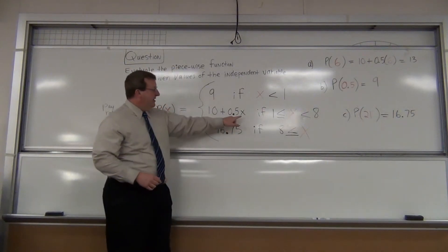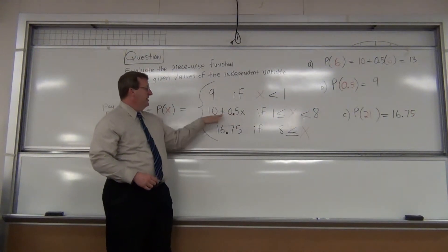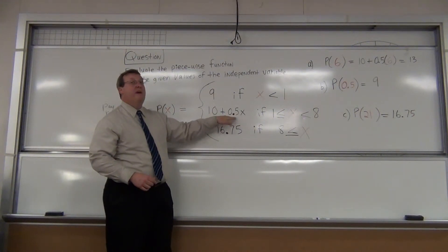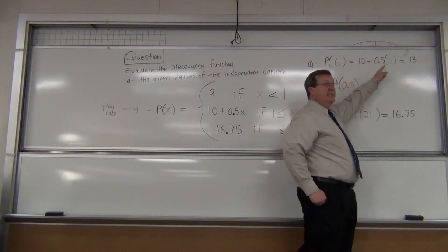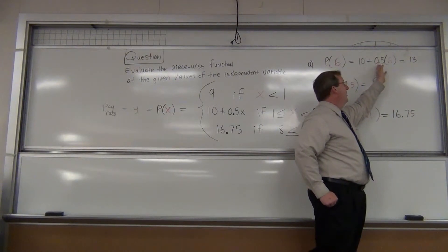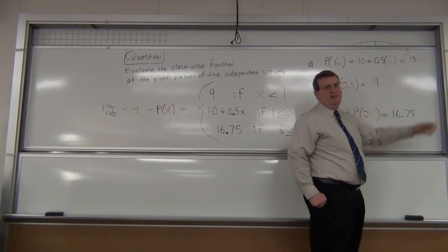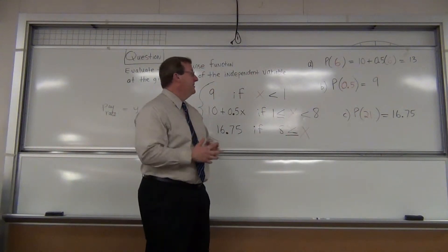So what you do is you plug in a six wherever you see an X in this piece of the function. Ten plus zero point five or one half X. So I have this solution written up here. Notice you plug in the six wherever the X was. So it's ten plus zero point five or one half times six gives you thirteen. So after six years on the job you might have thirteen dollars per hour. You get some pay increases.